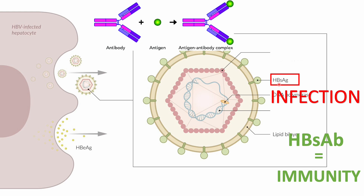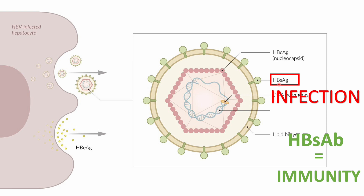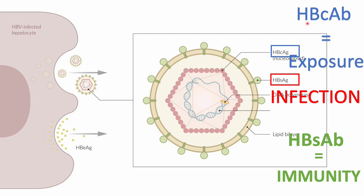What if someone has surface antibody with no surface antigen? How do we know if it's from vaccination or cleared infection? The marker is the hepatitis B core antibody. The core antigen surrounds the DNA and is only found in someone who has been infected. They form antibodies against it during infection, leaving behind hepatitis B core antibody for life. So: surface antigen = currently infected; surface antibody = immunity; core antibody = prior exposure to the virus.